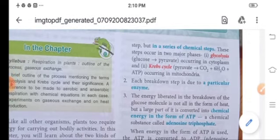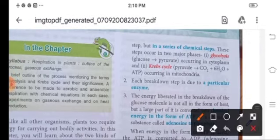It occurs in a series of chemical steps. Now there are two main phases to carry out these steps: glycolysis and Krebs cycle. Now glycolysis occurs in cytoplasm and Krebs cycle occurs in mitochondria. That means glucose is changing to pyruvate, and in Krebs cycle pyruvate is changing to carbon dioxide plus water and energy.